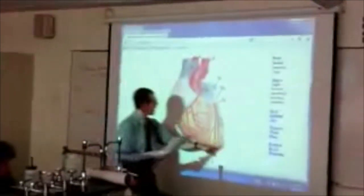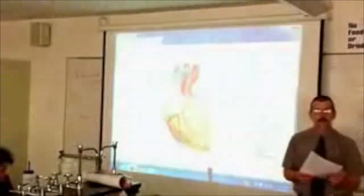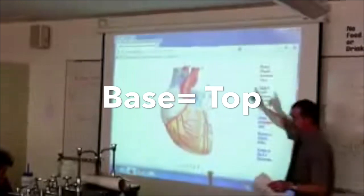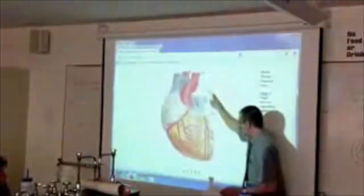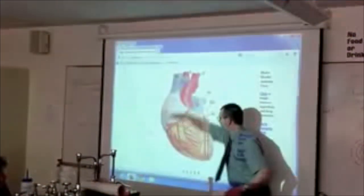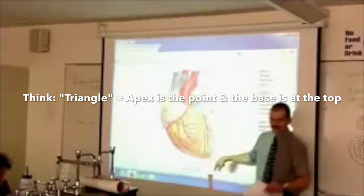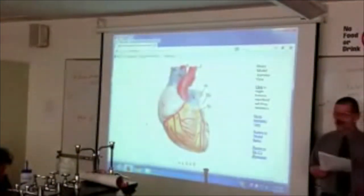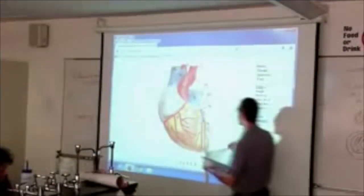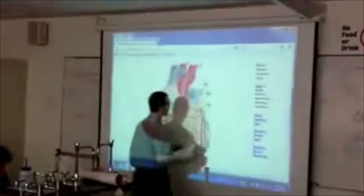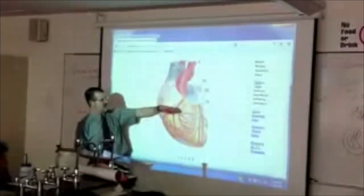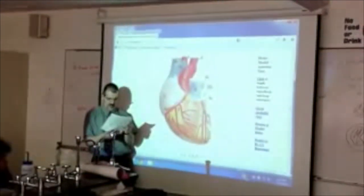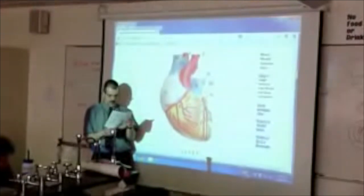The apex is here at the bottom. Where's the base? The base is the top — it seems backwards, but this is a triangle: the base is the flat part, the top of the heart. So where the veins are — you could say that's all the base where the plumbing is at the top. It's not as much a thing as a place.